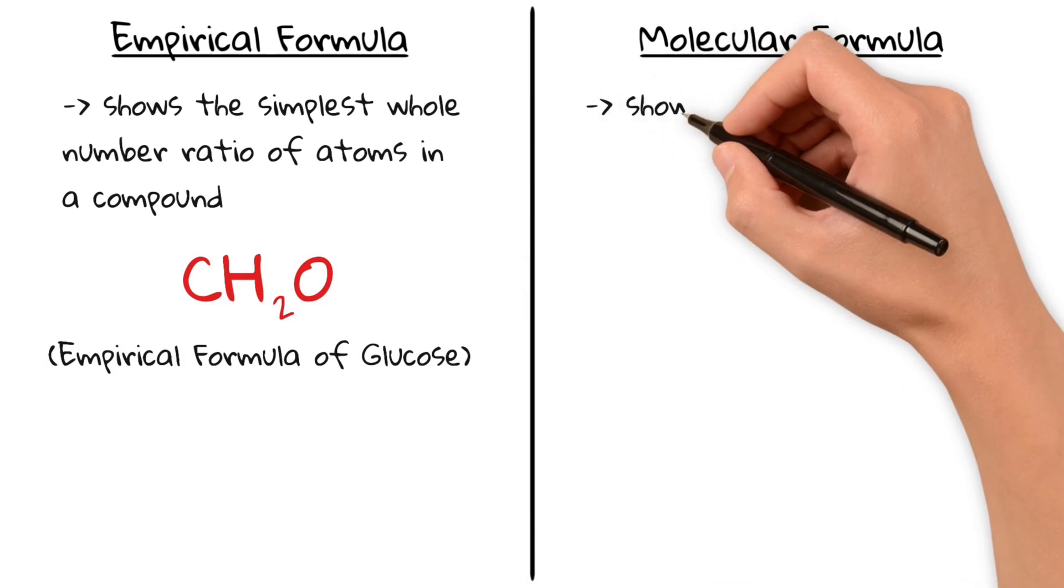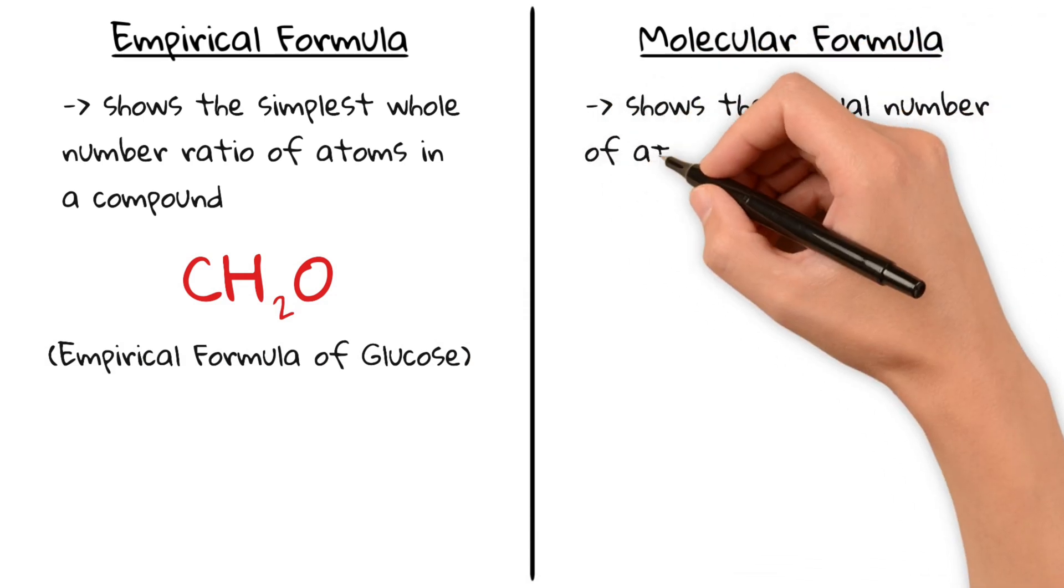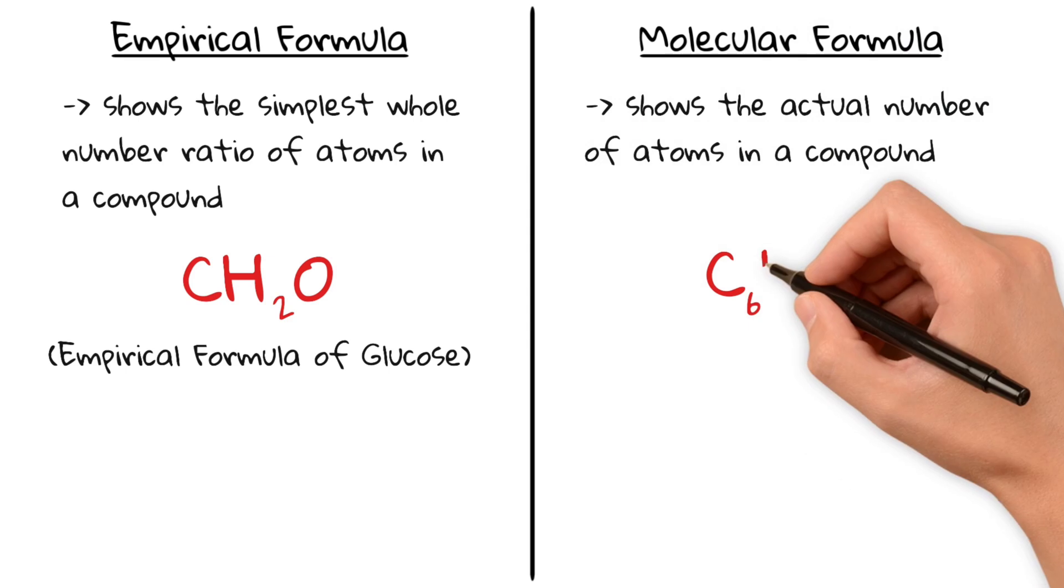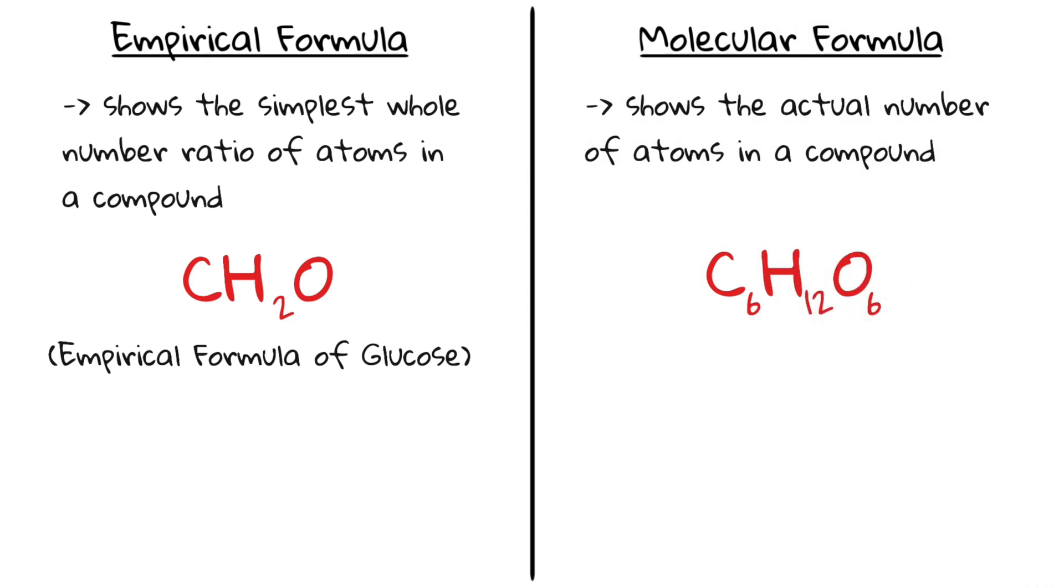A molecular formula shows the actual number of each type of atom in a molecule. For example, C6H12O6 for glucose.